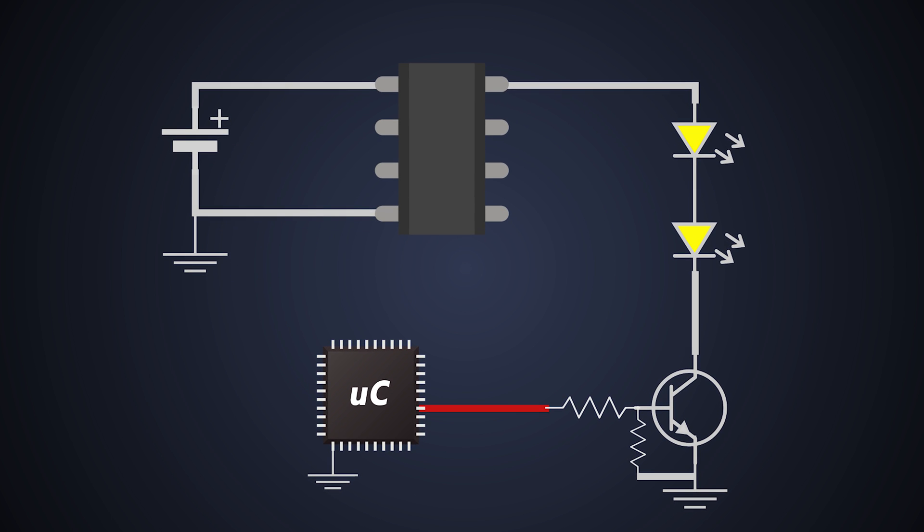If the load current is too much, in that case we have to use Darlington transistor which has very high HFE. And just like that, we can control multiple loads using microcontroller and transistors.